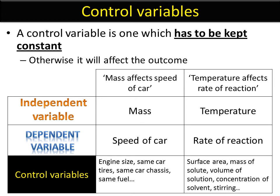For temperature affecting the rate of reaction, if I change the surface area, the mass of the solid I'm using, the volume of the solvent or solution, the concentration of any chemicals I use, or whether or not I stir them, it would change the effect — it would change the dependent variable.